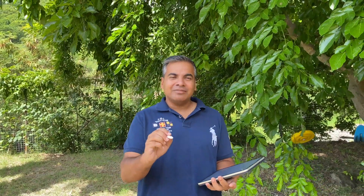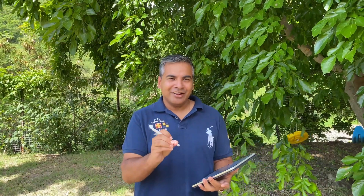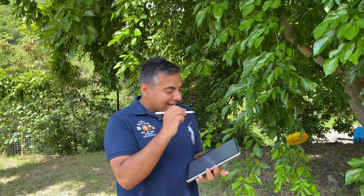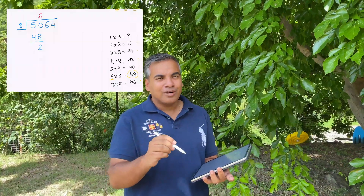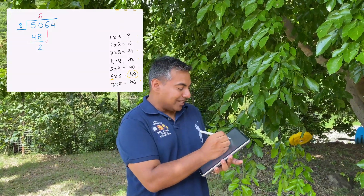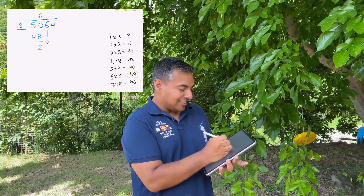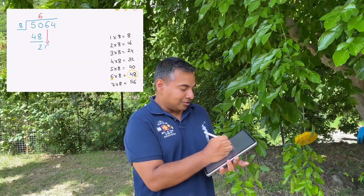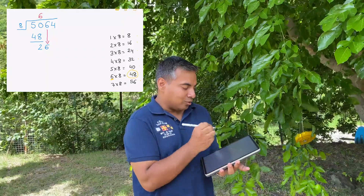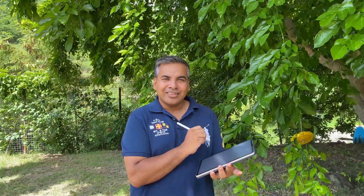Step number four is really exciting. We bring down the next digit from the big number right down to the last line. The next digit after the fifty was six, so we bring six down next to the number two, giving us twenty-six. That's step number four.